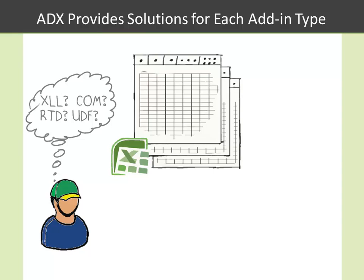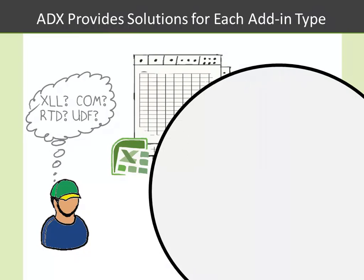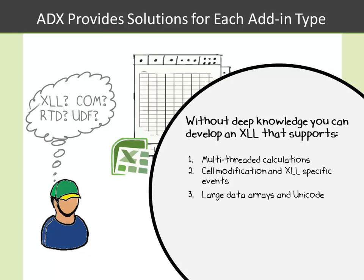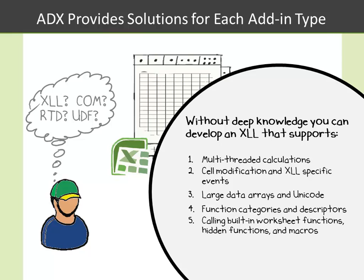A great example is that with only routine coding, you can build an XLL that supports multi-threaded calculations, cell modification and XLL-specific events, large data arrays in Unicode, function categories and descriptors including your own custom categories and descriptors. You also can call built-in worksheet functions, hidden functions and macros, and of course you can access the Excel object model.